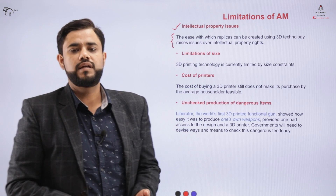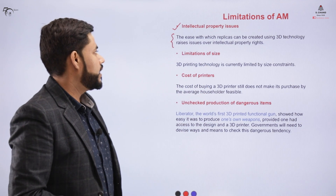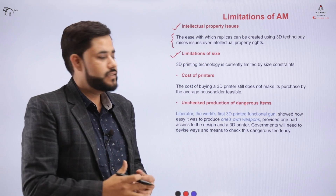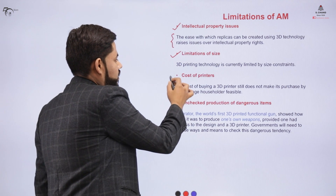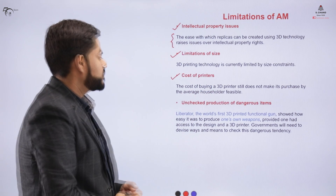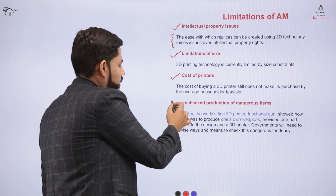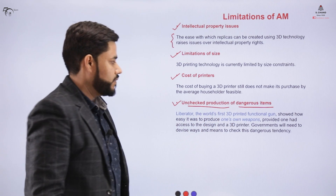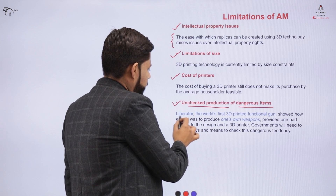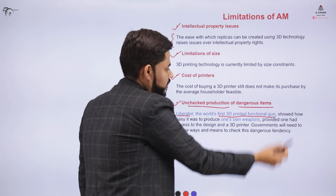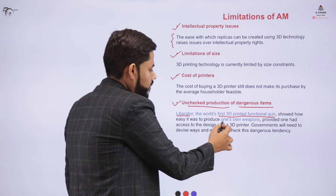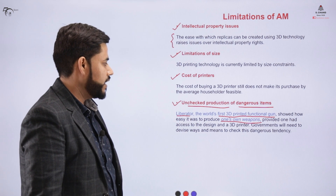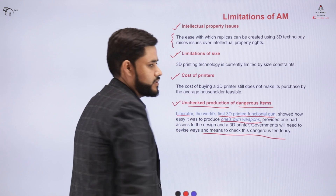There are certain intellectual property issues because 3D printed technology can be easily replicated — the codes are easily available online, creating IP concerns. There is also a size limitation and size constraints for 3D printed objects. The cost of 3D printers is also very high. Additionally, there is the risk of unchecked production of dangerous items — for example, the Liberator, the world's first 3D printed functional gun — and governments need to devise ways to check these dangerous tendencies.